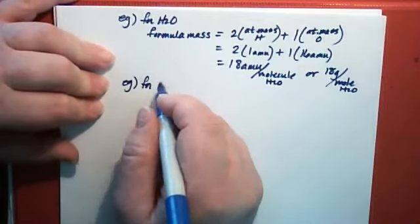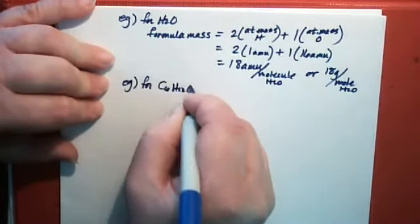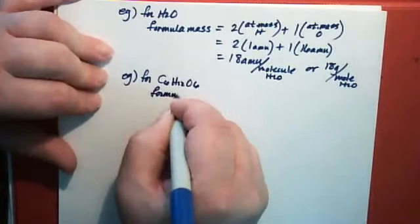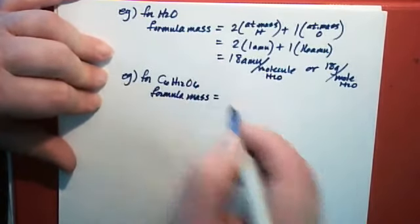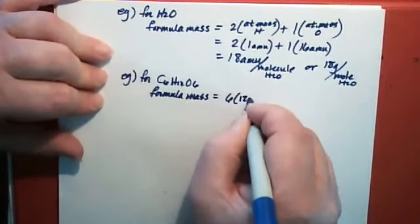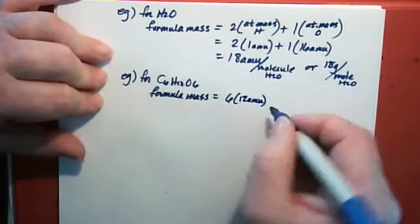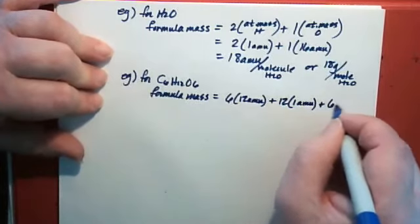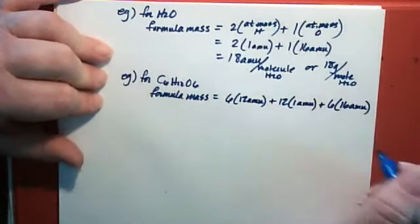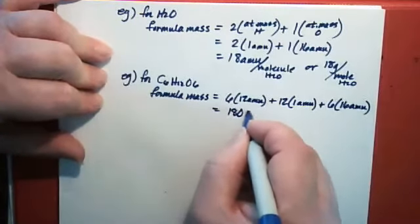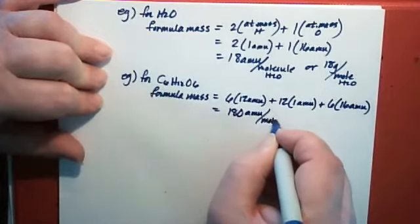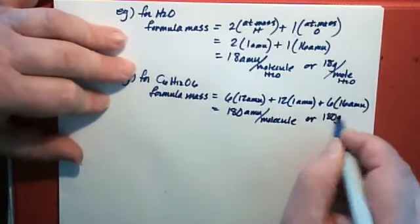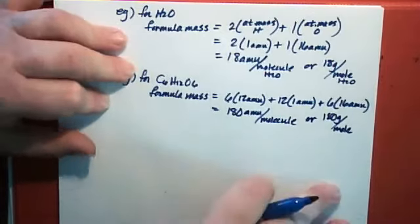For sugar, like a six-carbon sugar like glucose, the formula is C6H12O6. So the formula mass is going to be six times 12 AMU for the carbon plus 12 times one AMU for the hydrogen plus six times 16 AMU for the oxygen, which is 180 atomic mass units per molecule or 180 grams per mole.